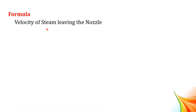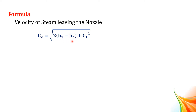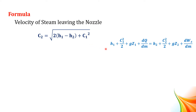Before solving this problem, we need the formula for finding the velocity of steam leaving the nozzle: C2 equal to square root of 2 into (H1 minus H2) plus C1 squared, where H1 is the enthalpy of steam at the inlet in Joules per kilogram, H2 is the enthalpy of steam leaving the nozzle in Joules per kilogram, and C1 is the initial velocity of steam at the entry of the nozzle.